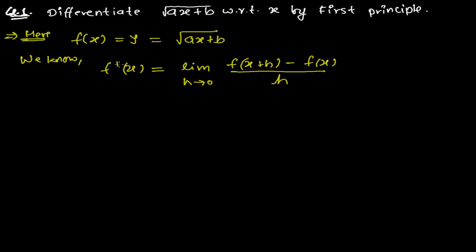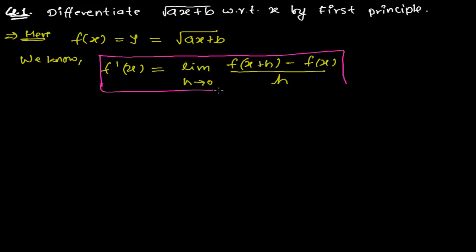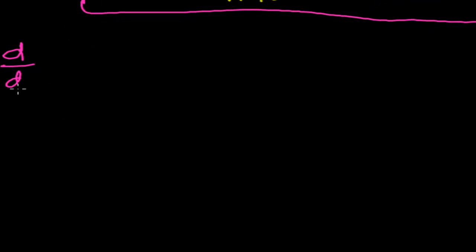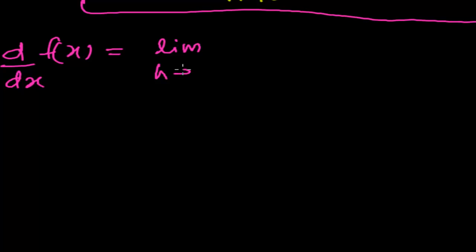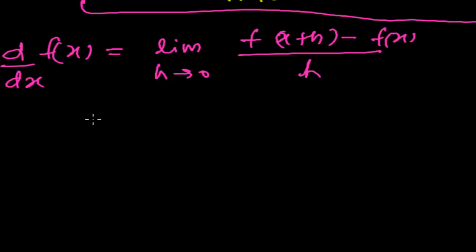What we are going to do is use this formula to find the derivative. So therefore, the derivative of function f of x is again the limit as h tends to 0 of f of x plus h minus f of x, all divided by h.